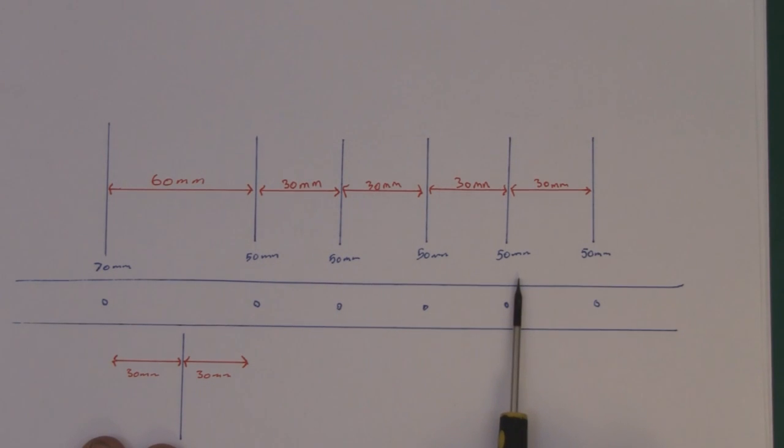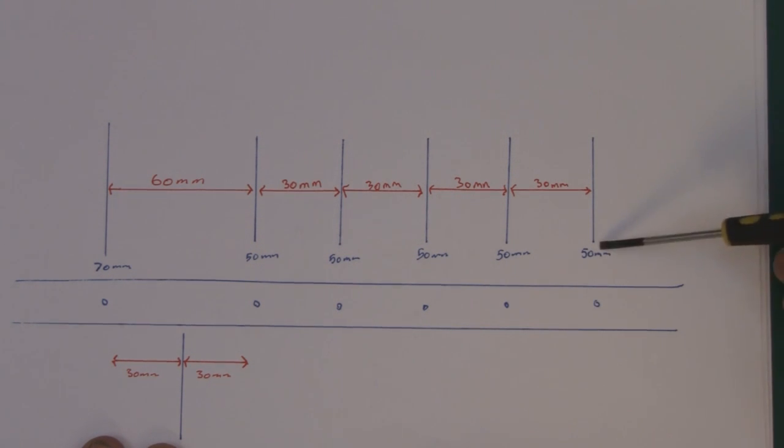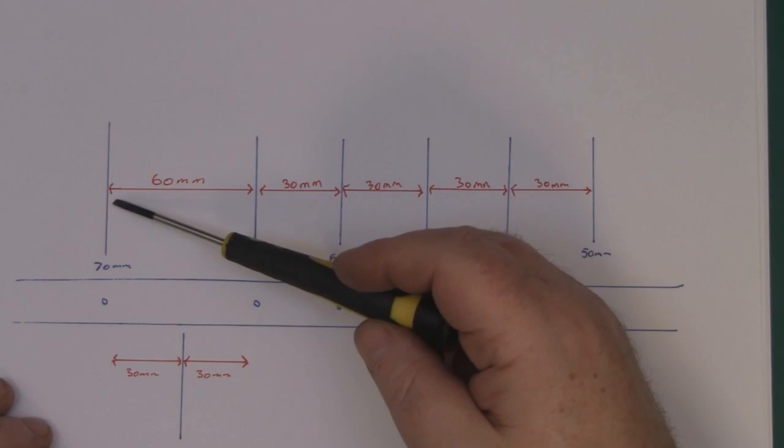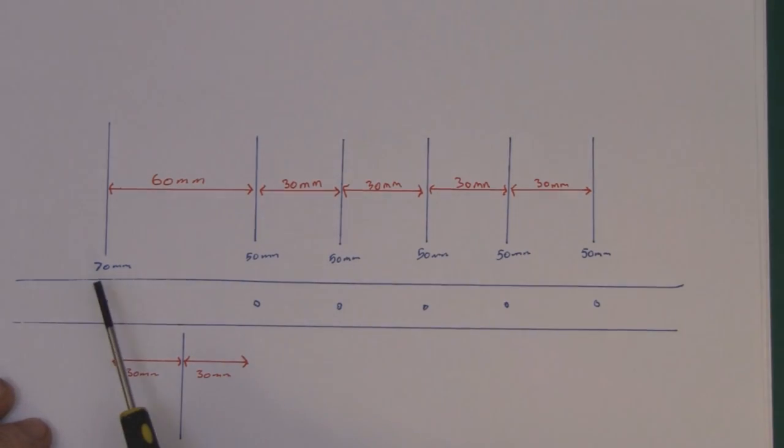The measurements are quite straightforward. We've got five parasitic elements, each one 55 millimeters long, and one element that is the reflector at the back, which is 70 millimeters long. These are all spaced out quite uniformly.